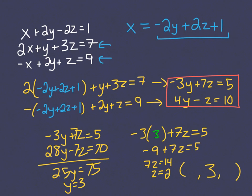I chose to substitute my y value of 3 into this first equation here. So it's negative 3 times y plus 7z equals 5, and when I solve that, I get z equals 2.